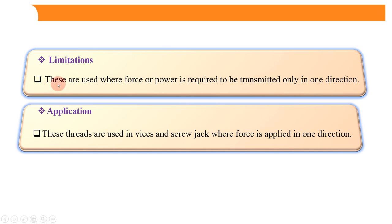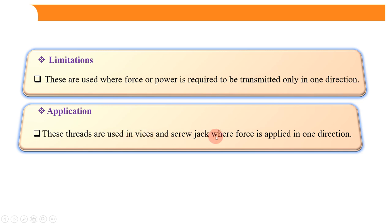The limitation of buttress threads is that they are used where force or power is required to be transmitted only in one direction — such as in a screw jack where power is transferred only in one direction. The application of buttress threads is that they are used in vices and screw jacks, where force is applied in one direction.